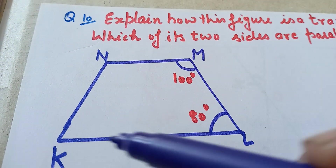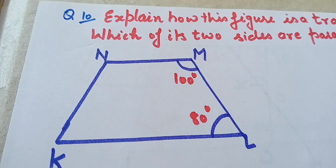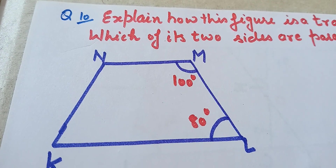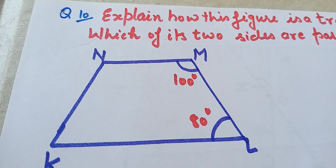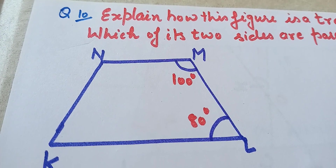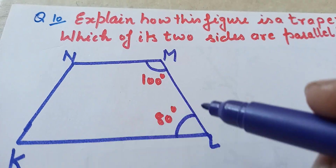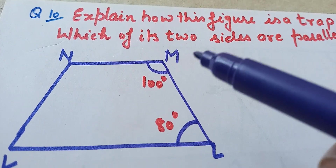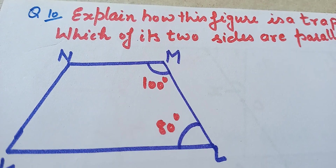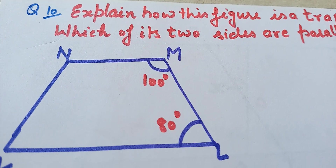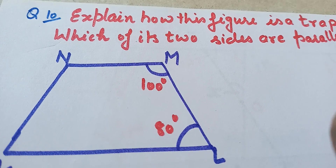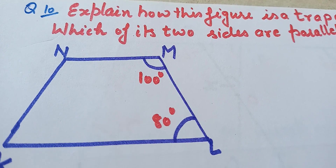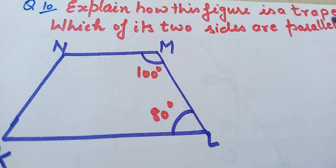KLMN is a quadrilateral given to us and we have to prove it is a trapezium. We know that if one pair of opposite sides of a quadrilateral is parallel, then the quadrilateral is a trapezium.